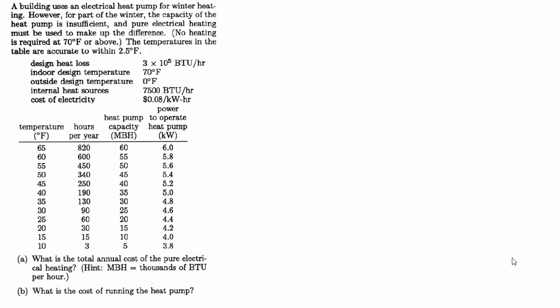We know the design heat loss is 3×10^5 BTU per hour. The indoor design temperature is 70 degrees. The outdoor temperature on a design day is zero degrees. There are internal heat sources of 7500 BTUs per hour total. And the cost of electricity is eight cents per kilowatt hour. And we've been given a table with different temperatures in five degree increments and the number of hours per year that the conditions outside are at that temperature.